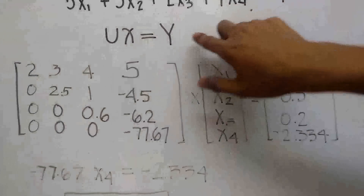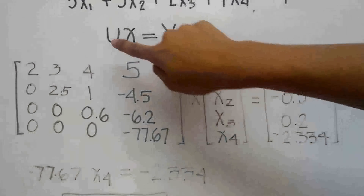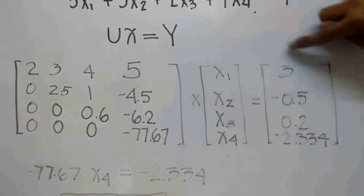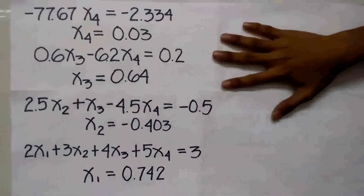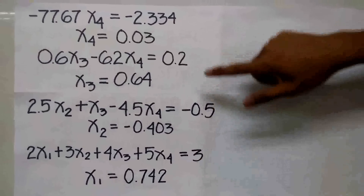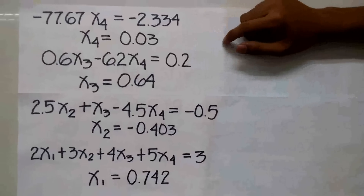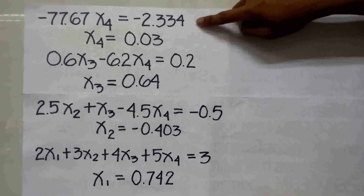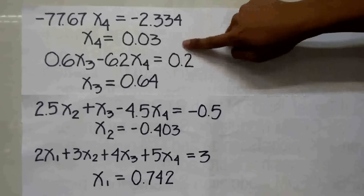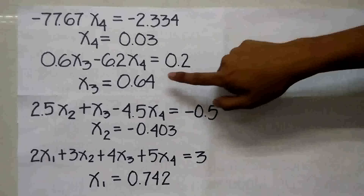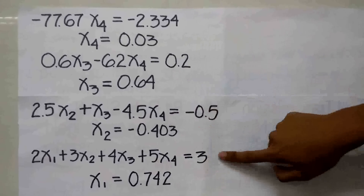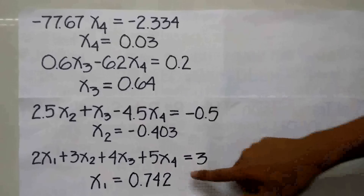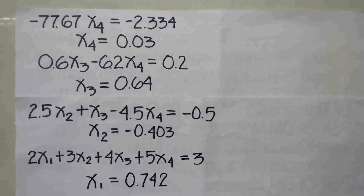After that, we will use Ux equal to Y, and we will multiply the upper triangular matrix times the matrix X equal to the Y matrix. Now we are ready to solve for the values of X sub 1, X sub 2, X sub 3, and X sub 4. I decided to solve for X sub 4 first because it will be easier that way. From this equation, we get X sub 4 is equal to 0.03. From here, X sub 3 is equal to 0.64. From here, X sub 2 is equal to negative 0.403. And finally, X sub 1 is equal to 0.742.